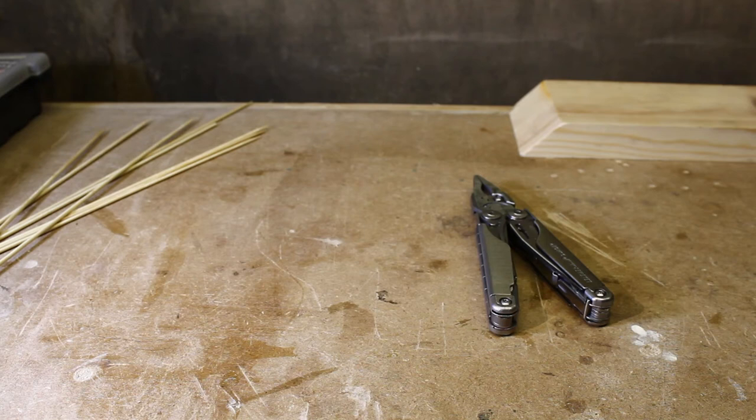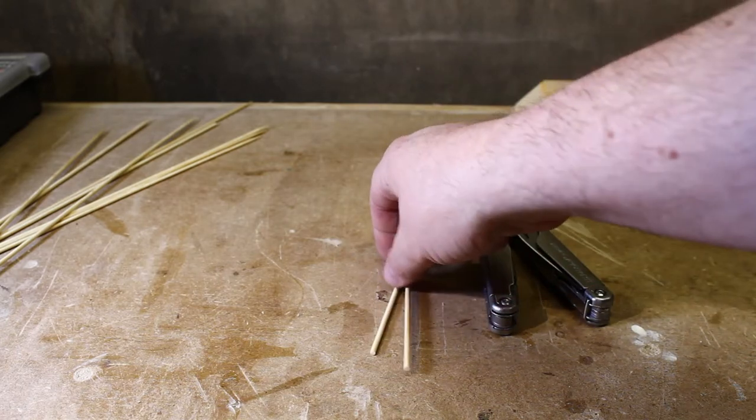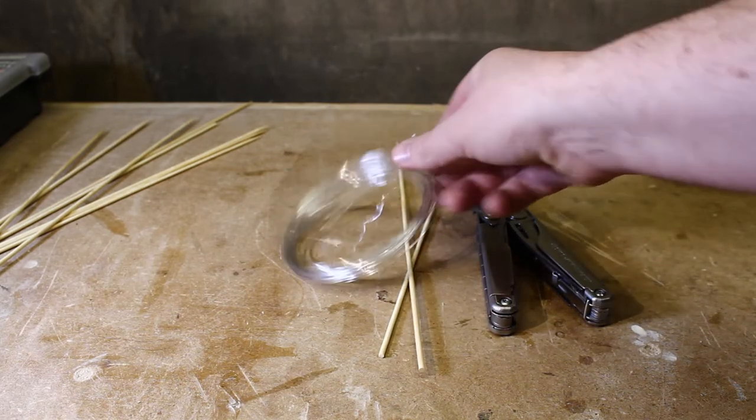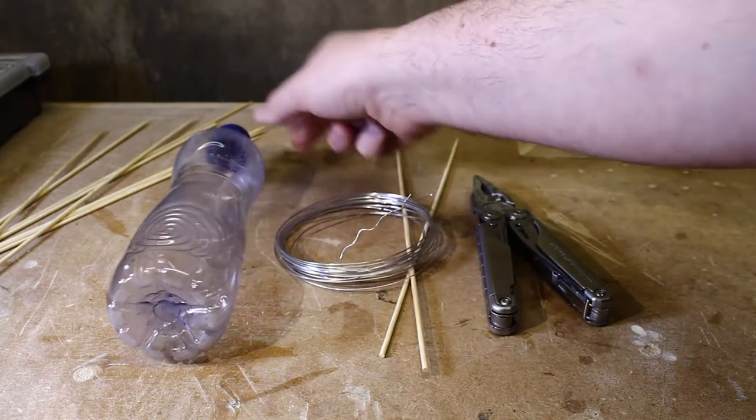Project number one is a small bird feeder. All you need is two bamboo skewers, some tie-in wire, and a plastic bottle.